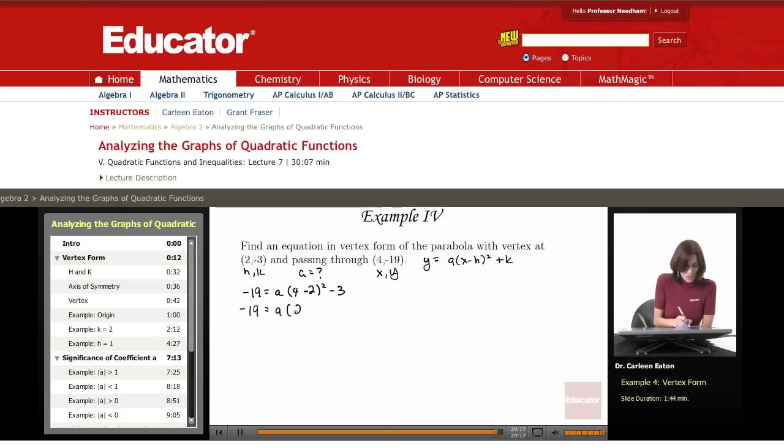4 minus 2 gives me 2 squared minus 3, so that's negative 19 equals a times 4 minus 3. Negative 19 equals 4a minus 3. So I'm going to add 3 to both sides to give me negative 16 equals 4a.